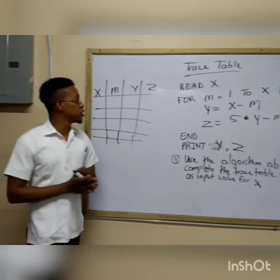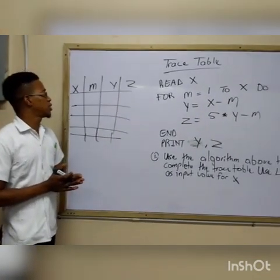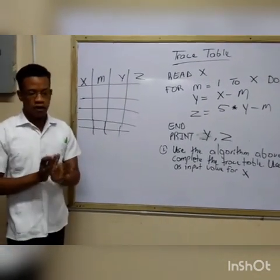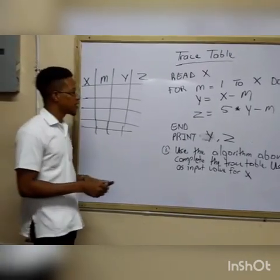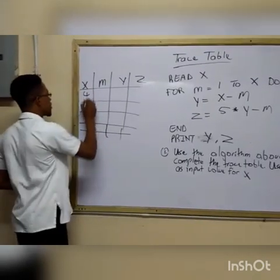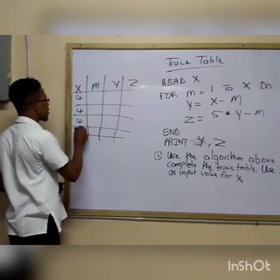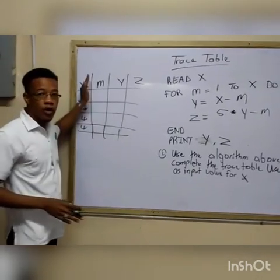So the first column in the trace table is the value for x. So we said the value for x is 4, right? So that here 4 means we are going to write 4 here, 4 here, 4 here, and 4 here. Now why do we have 4, 4 times?